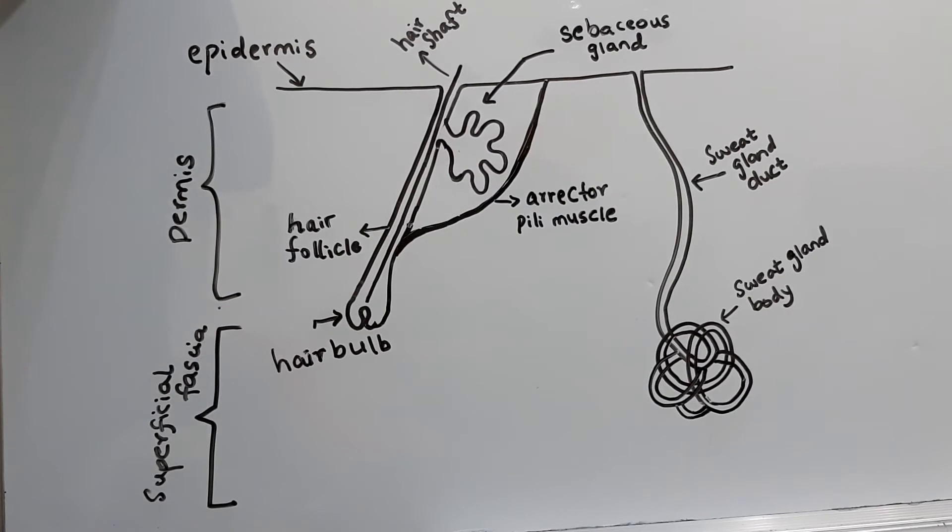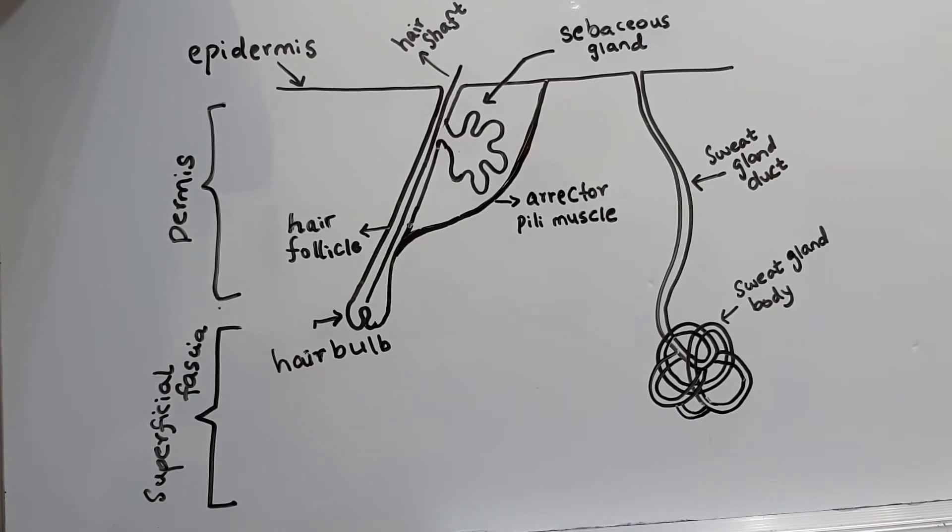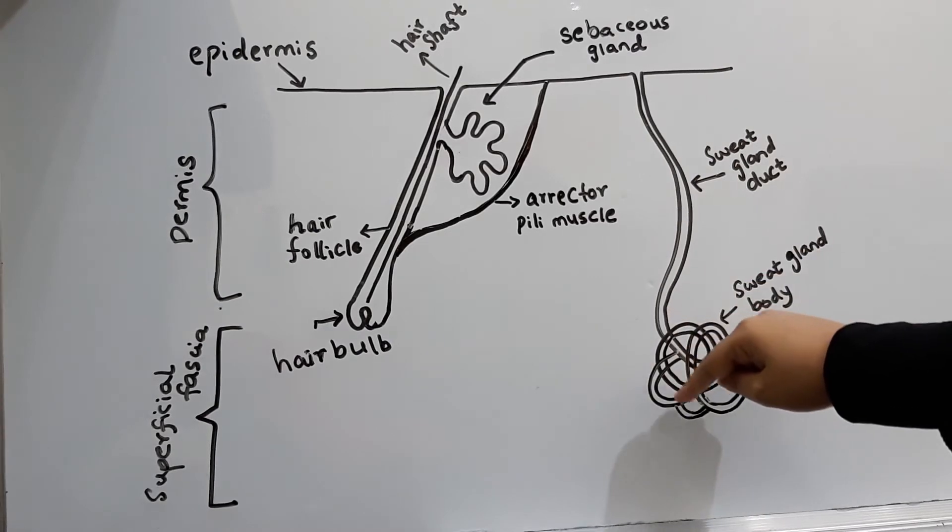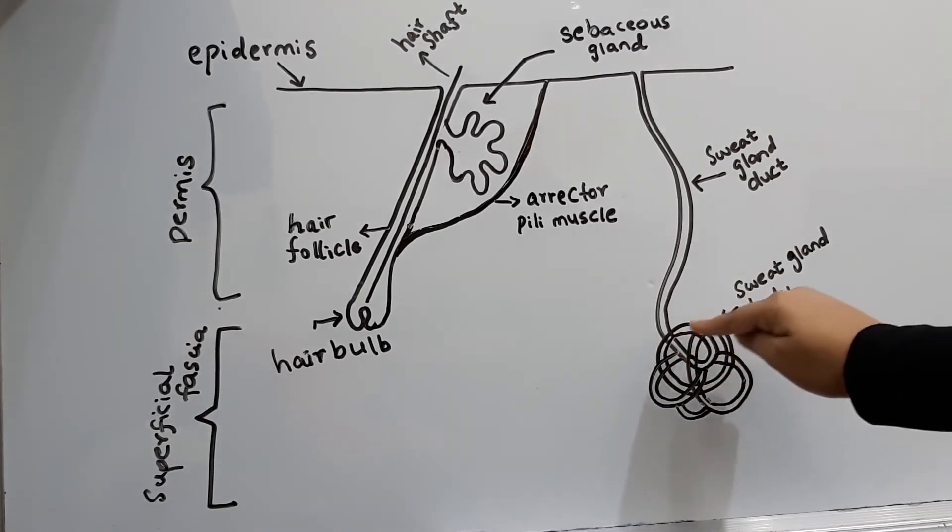Coming to the secretion of the sweat gland, that is sweat, its basic purpose is to regulate the temperature of the body. Coming to the structure of the sweat gland, the sweat glands have a long spiral structure in the form of tubes.